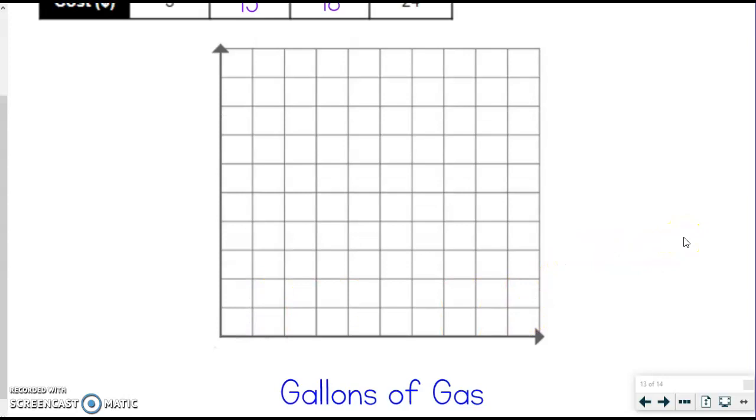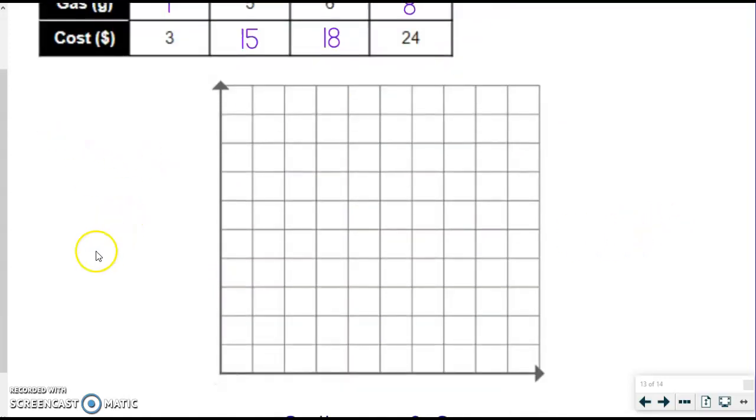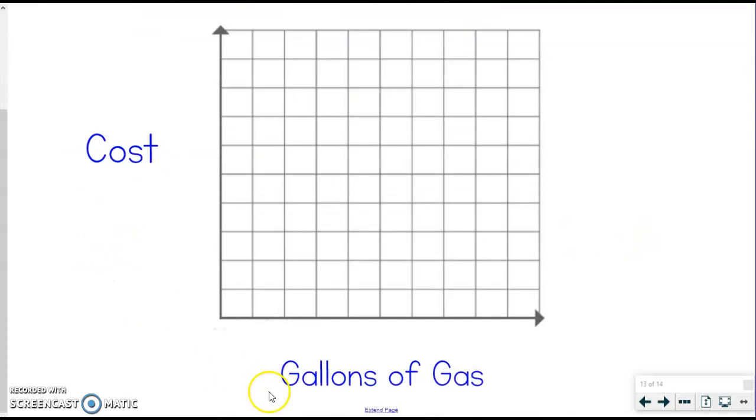And notice, we're not graphing on a four quadrants graph. We're just doing one quadrant. So these are all going to be positive numbers we're dealing with. So the other one we're labeling is cost, and that's going to be our y-axis. So we want gallons of gas on the bottom, cost on our y-axis.